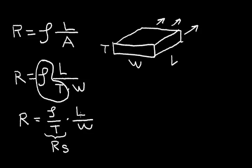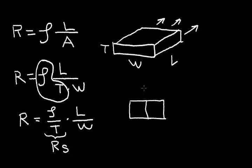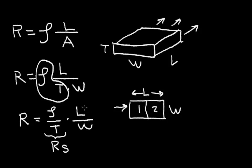I'll call that R sub S. This next term, L divided by W, is the number of squares that the material has. For example, if I have a square and another square for my resistor — this is the length, and this is the width — the current is always in the direction of the length. I can divide L by W and I get two squares. So my L divided by W is two squares in this example.